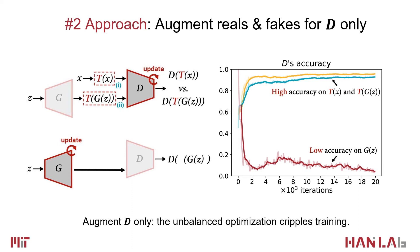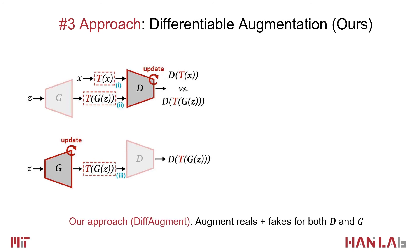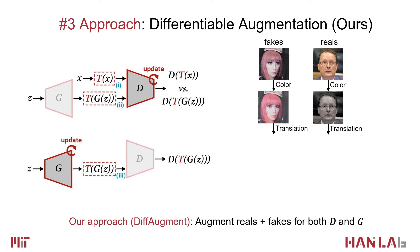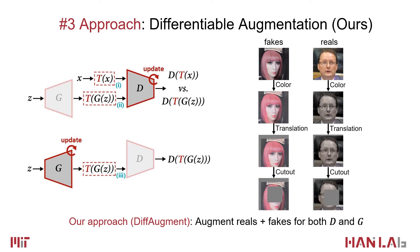To combat it, we propose DiffAugment, which applies differentiable augmentation to both real and fake images for both generator and discriminator training. Here, the augmentation T must be differentiable to propagate the gradient through the augmentation back to the generator.